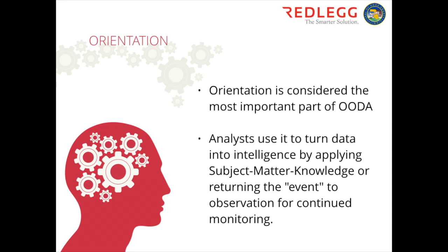Take a phased approach. The right intelligence is very different for every organization. Know what you're trying to get out of the program — are you trying to get real-time blacklisted IP addresses because that's what your tools can ingest? Know your goals from an organizational perspective and what your tools can actually use. Build your program in a modular fashion. If you take on too much, your program will start stalling and failing. A phased approach will make you more successful.